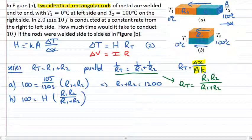If those things are the same, that means they have the same thermal resistance. Even though R1 plus R2 is 1200, we also know, because they're identical, that R1 is equal to R2, and that must be equal to 600.